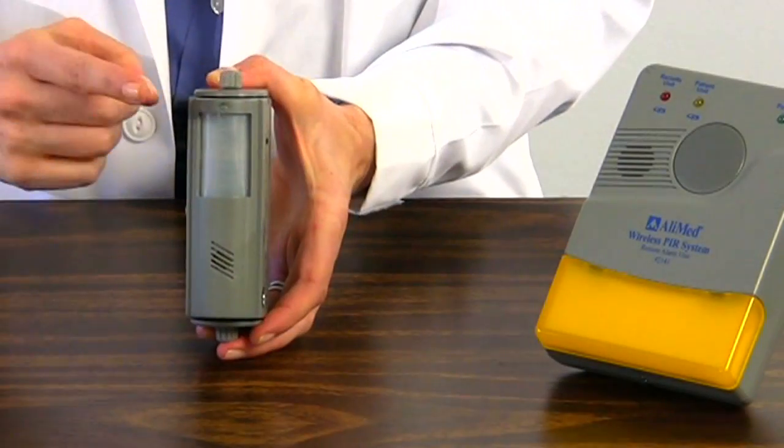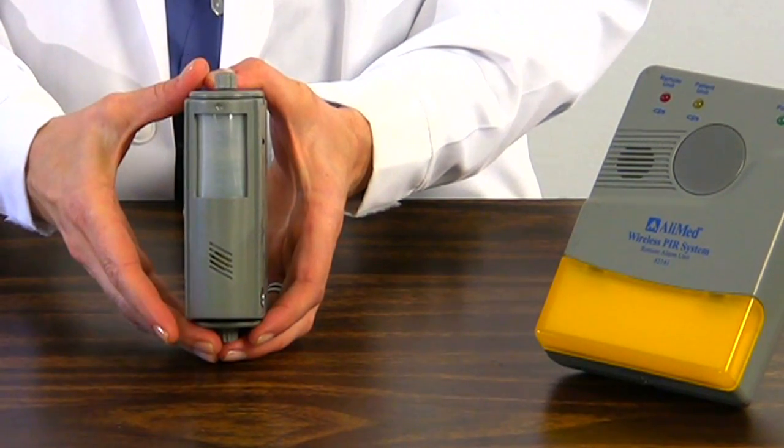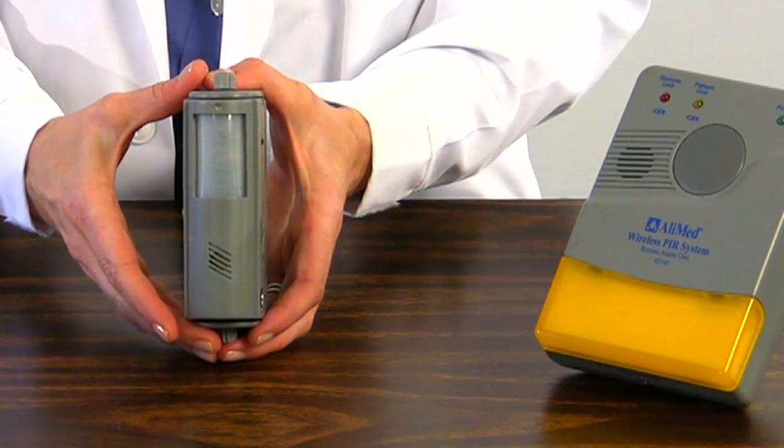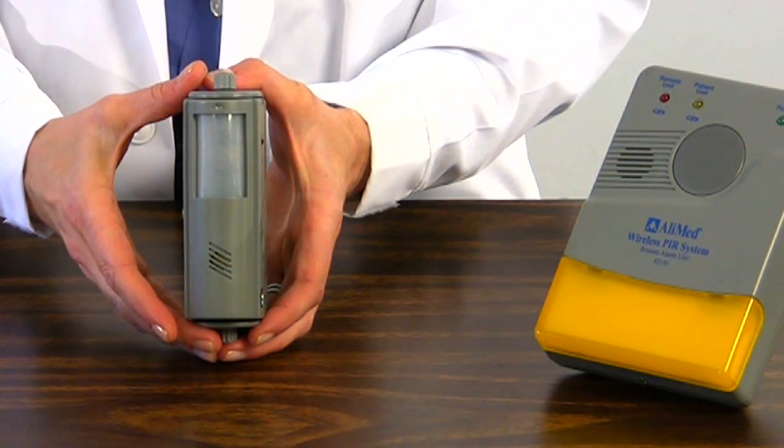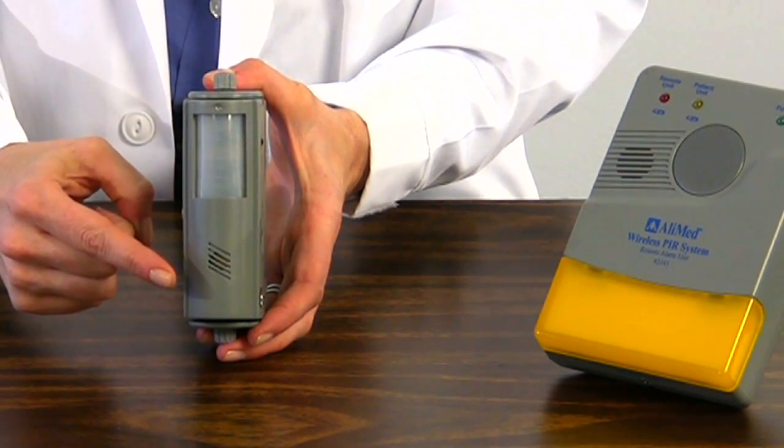On the front of the alarm is the sensing area. This is the part of the alarm that emits the invisible infrared sensing field. Be sure this is the side facing out when the alarm is in use. On either side is the low battery alert light and the speaker where the local alarm sound is emitted.